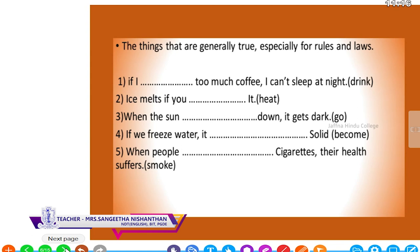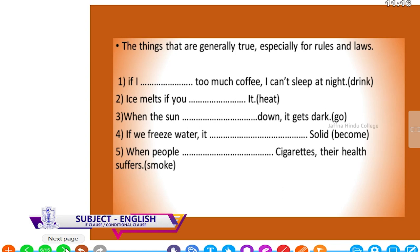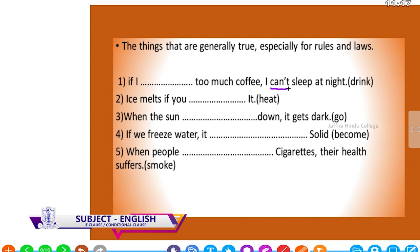Here is a simple activity for type 0. Things that are generally true, especially rules and laws, use type 0. For example: if I [drink] too much coffee, I cannot sleep at night. The main clause 'I cannot sleep' is in simple present, so the if-clause must also be in simple present. The subject is 'I', so the verb form is 'drink'.